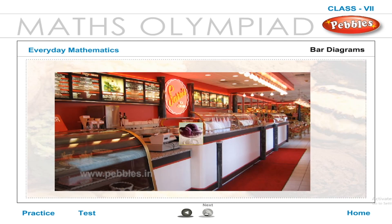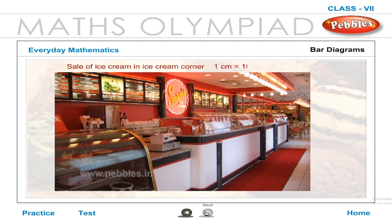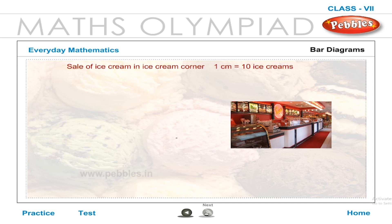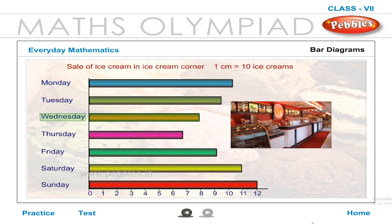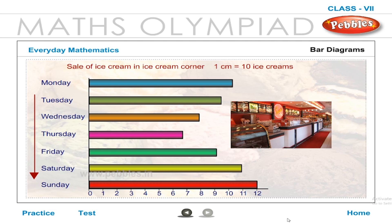Example: Study the bar diagram showing the sale of ice cream in an ice cream corner, where 1 cm = 10 ice creams, from Monday through Sunday. What kind of bar diagram is given? The bar diagram is a horizontal bar diagram. What information does it convey? It conveys day-wise sales of ice creams from Monday to Sunday. What was the maximum number of ice creams sold in a day? The bar of maximum length is 12 cm, on Sunday.